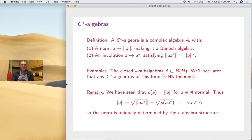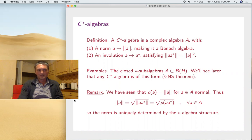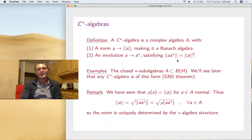So C*-algebra basics, as I was telling you. Definition, as usual, we'll use the abstract definition. As before, we take a complex algebra with a norm and involution related by this tricky formula: ||a*|| = ||a||². The examples are of course the closed *-subalgebras A ⊂ B(H). We'll show later that any C*-algebra is of this form, the so-called GNS theorem.